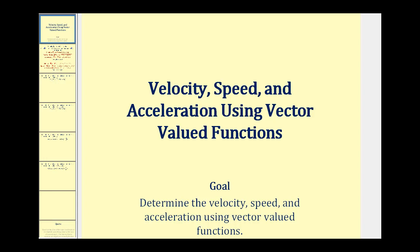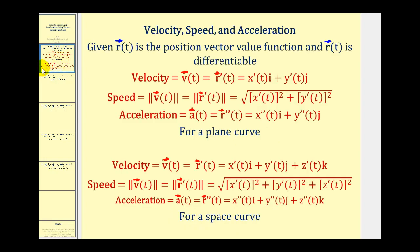Welcome to a video on velocity, speed, and acceleration using vector-valued functions. If r(t) is the position vector-valued function and r(t) is differentiable, then the first derivative of r(t) will give us the velocity vector-valued function, the magnitude of the velocity vector-valued function will give us the speed, and the second derivative of r(t) — or the derivative of v(t) — will give us the acceleration vector-valued function.